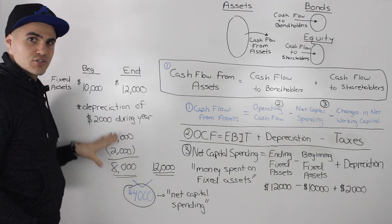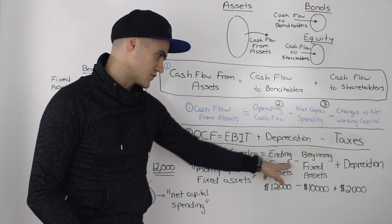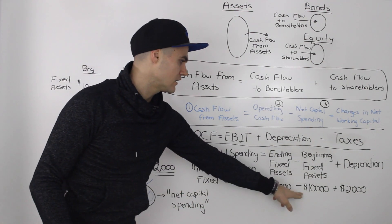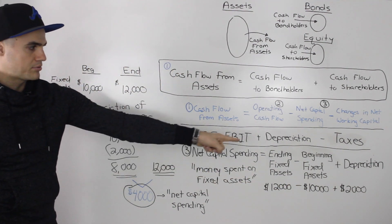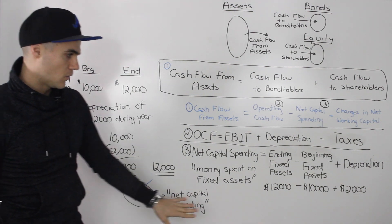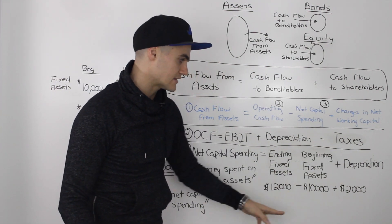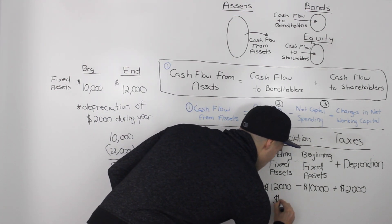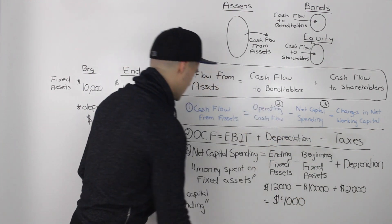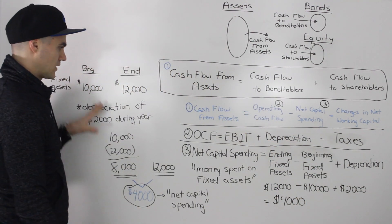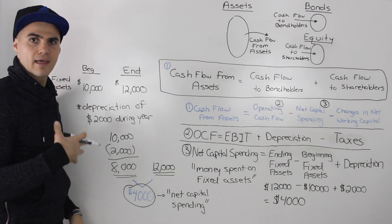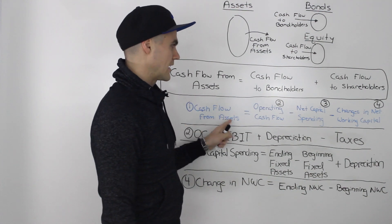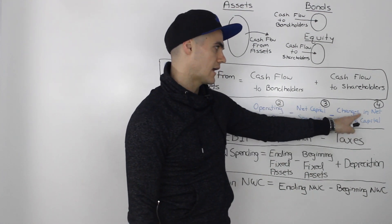You can also use the formula directly: ending fixed assets of $12,000 minus beginning fixed assets of $10,000 plus depreciation of $2,000 equals $4,000 of net capital spending — the same result. I just wanted to show the intuitive approach so you can understand it better. The next portion is changes in net working capital — footnote four.